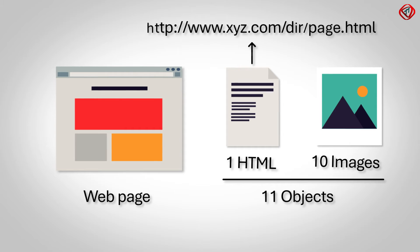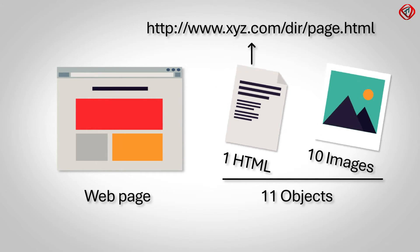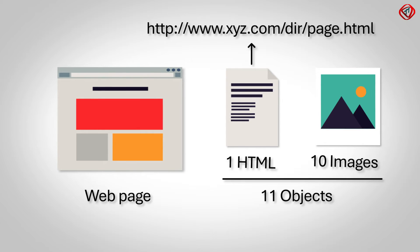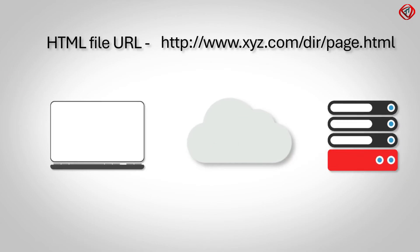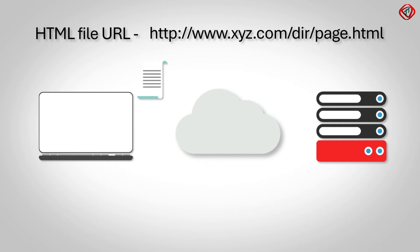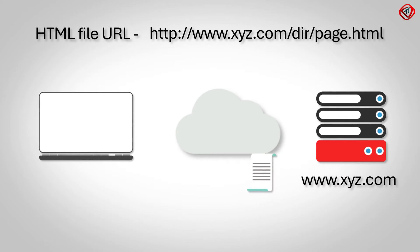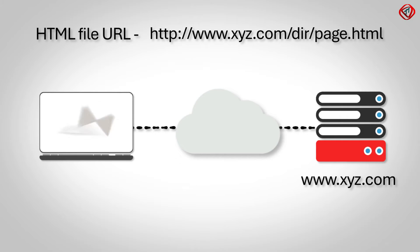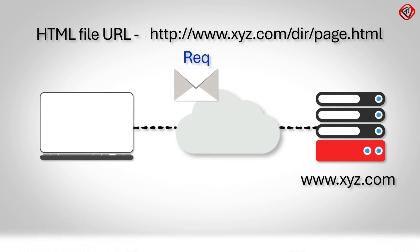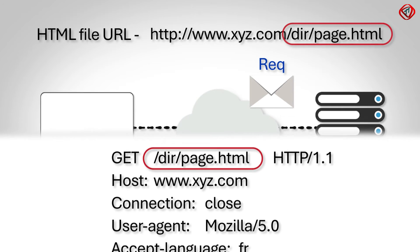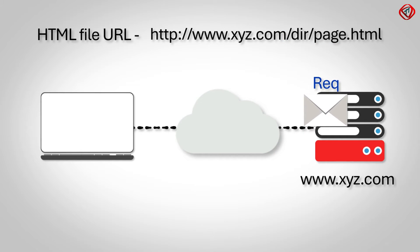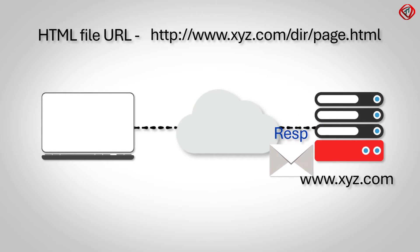Suppose this is the URL for the HTML file. The web page's 11 objects will be transferred to the web browser via TCP connections. To set up a TCP connection, the web browser sends a small TCP segment to the web server. The web server acknowledges and sends a small TCP segment back to the web browser. The web browser then sends an acknowledgement along with the HTTP request message into the TCP connection via its socket. The request message includes the path name for the HTML file. The web server receives the HTTP request message via its socket, collects the object from the specified path, and sends it in an HTTP response message.